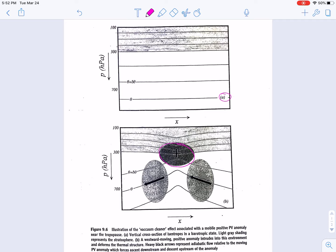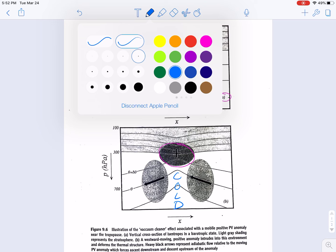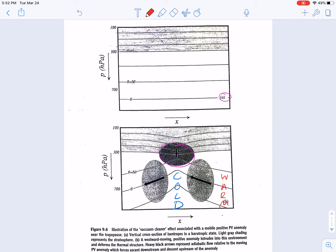We know that if this were the case, our PV anomaly would induce changes to the isentropic structure of our atmosphere. Such that we know underneath our positive PV anomaly aloft, we would have our cold dome of air below, coincident with the idea of our cold core cyclones, coupled with our warm pockets of air on either side.